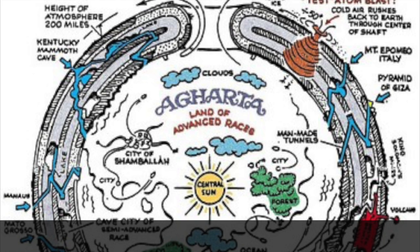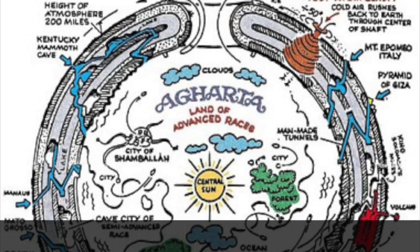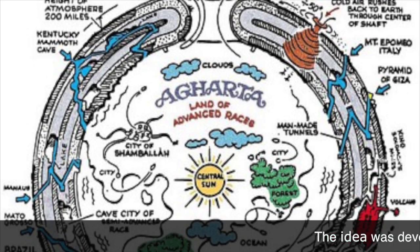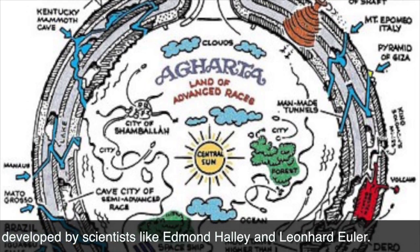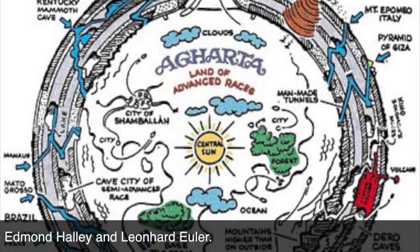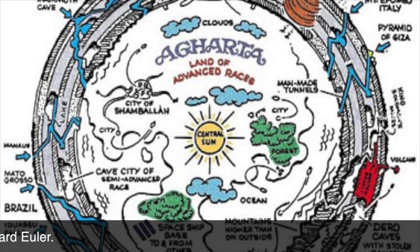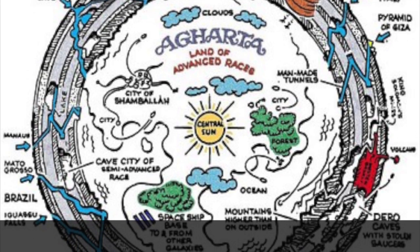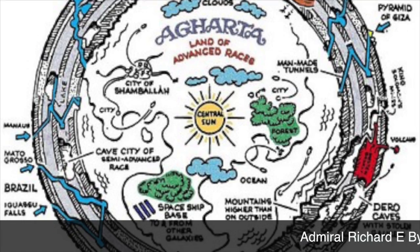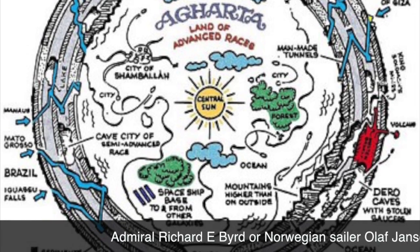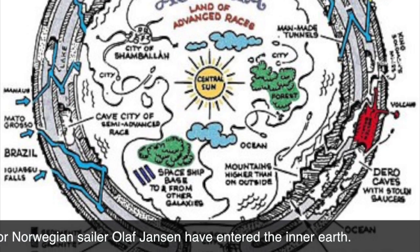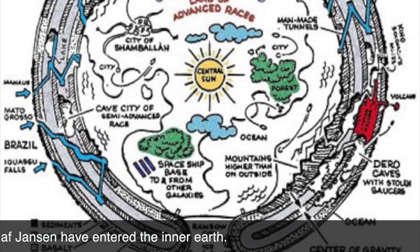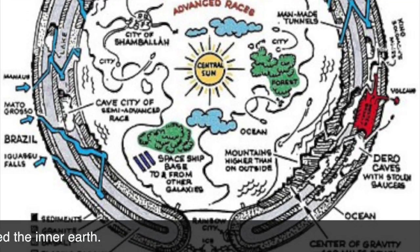There is a hypothesis called hollow earth theory. According to Wikipedia, it proposes that planet Earth is either entirely hollow or contains a substantial interior space. This idea was developed by scientists like Edmund Halley and Leonhard Euler, but these days it's more like a conspiracy theory. A rumor has it that Admiral Richard Byrd or Norwegian sailor Olaf Janssen have entered the inner earth. Also, a legendary world called Shambhala or Agartha is said to be in the inner earth.